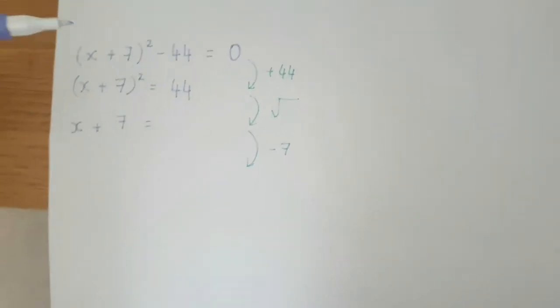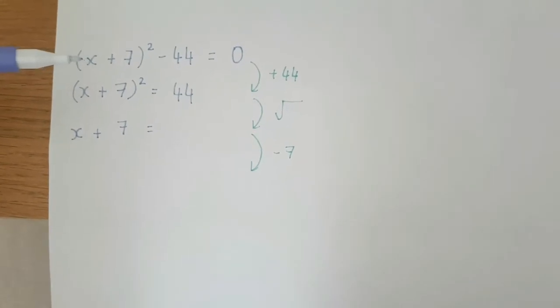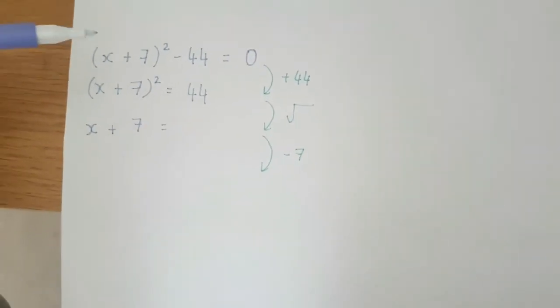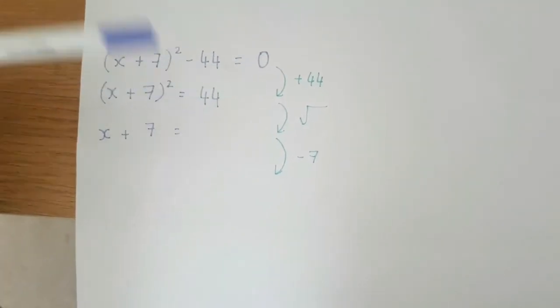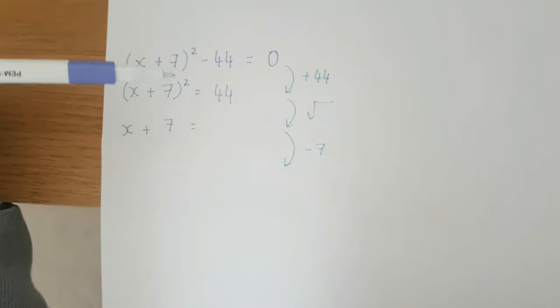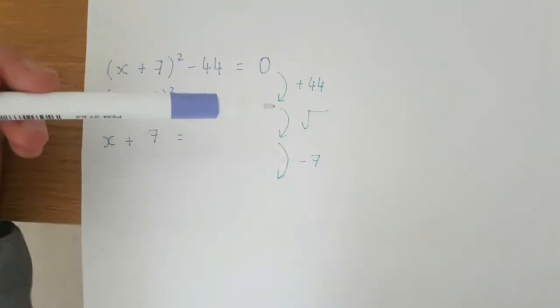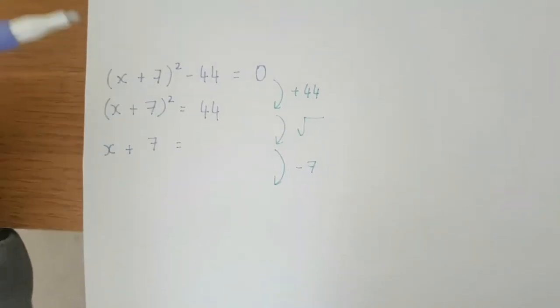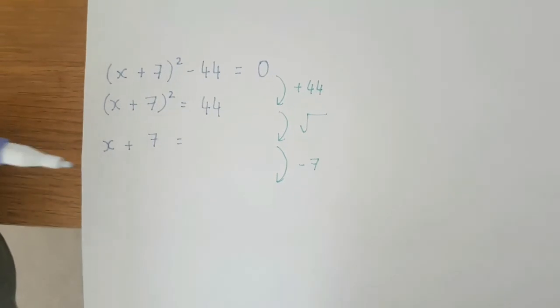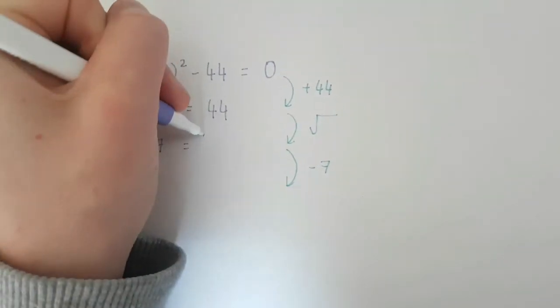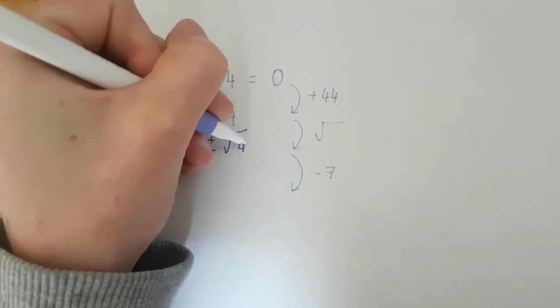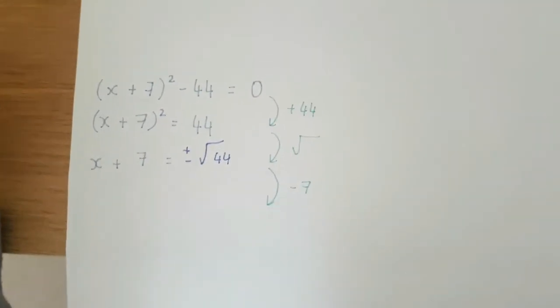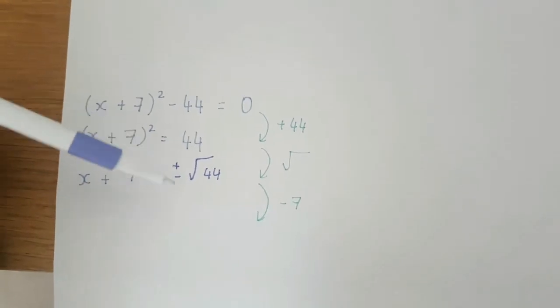So I just want to have a quick look at rearranging to solve just because there's a common mistake that people make. So I have (x + 7)² - 44 = 0. If I add 44 to both sides I then get (x + 7)² = 44. I'm then going to square root both sides and now this is where the common mistake is made because obviously when we're square rooting we're going to have a positive and negative root. And we know when we look at quadratics there are normally two solutions to a quadratic so these are my two solutions that are going to be given.